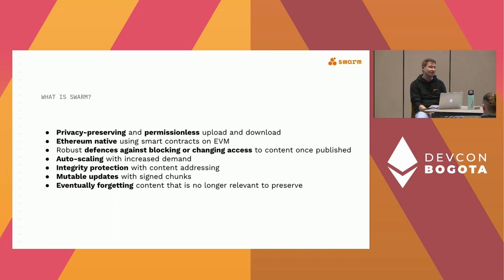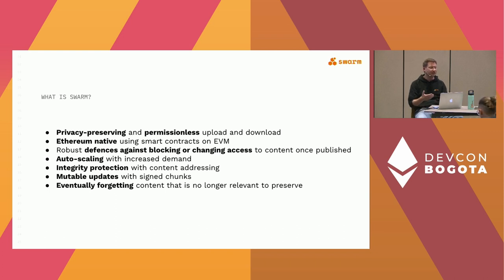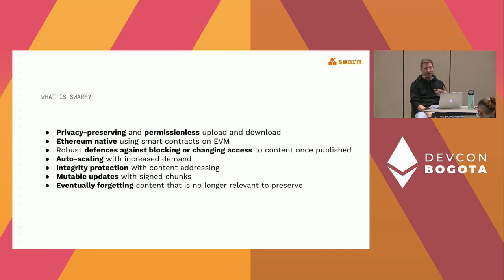There is an auto-scaling feature. Because this is a distribution network as well, when data is downloaded, copies are stored on nodes and therefore it's available on more nodes. The more people sharing the same data sets, the more copies on the network — this helps with CDN-type functionality. There is integrity protection with content addressing, but also mutable updates with signed chunks, so you can have both. You can store not only static data sets but data structures that can be updated and used for application layers.